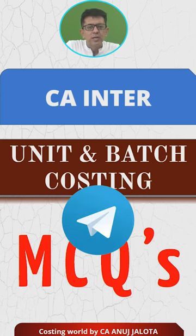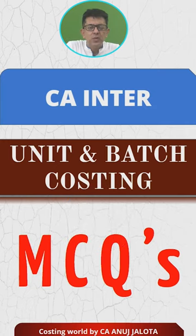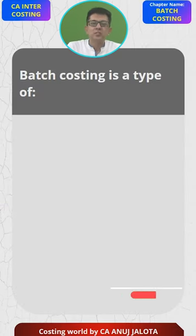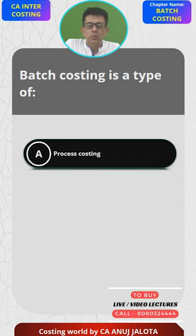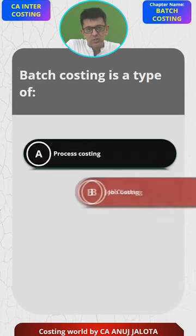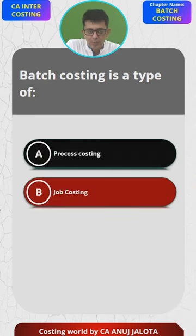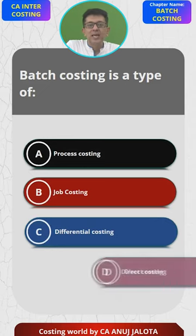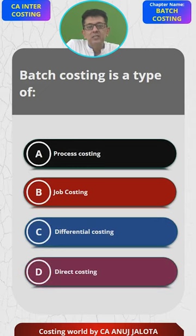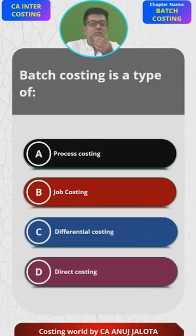Let's see what MCQ we have today. Batch costing is a type of — four options: A) process costing, B) job costing, C) differential costing, and D) direct costing.